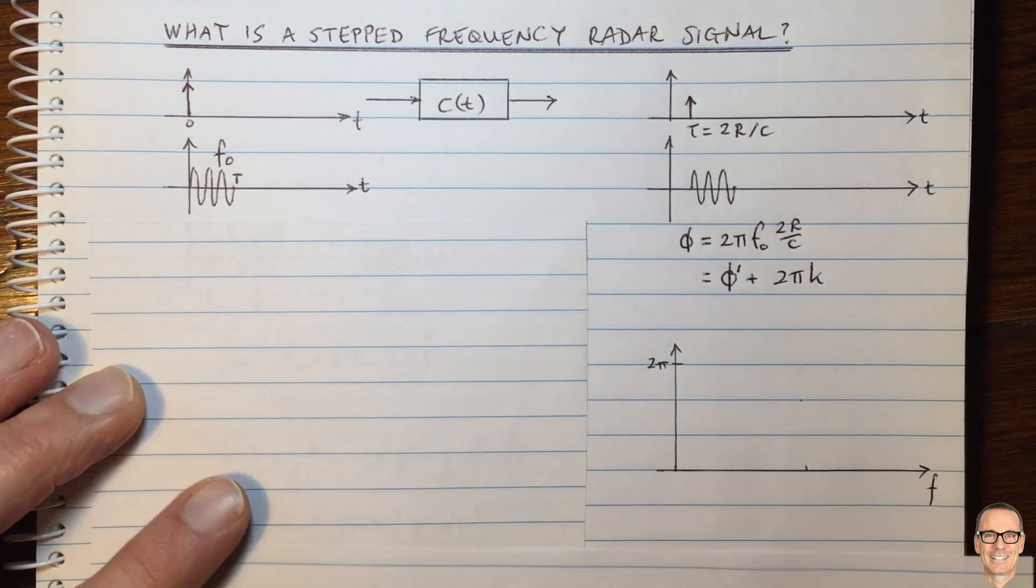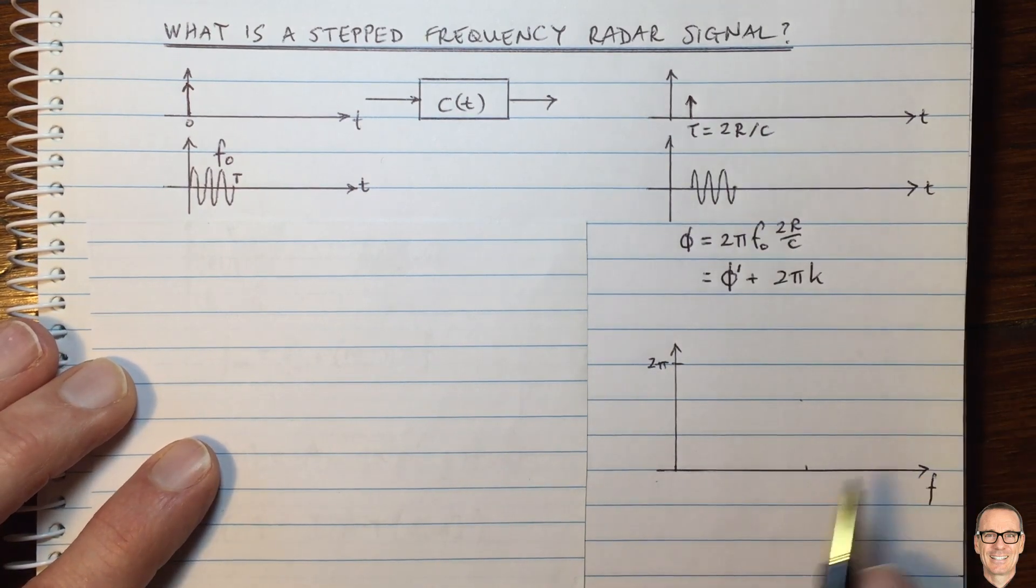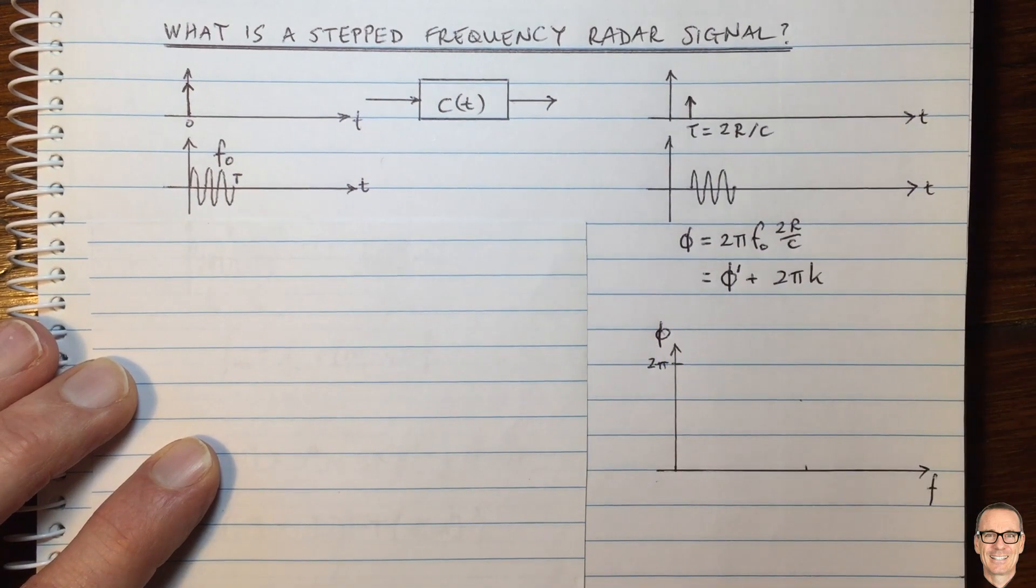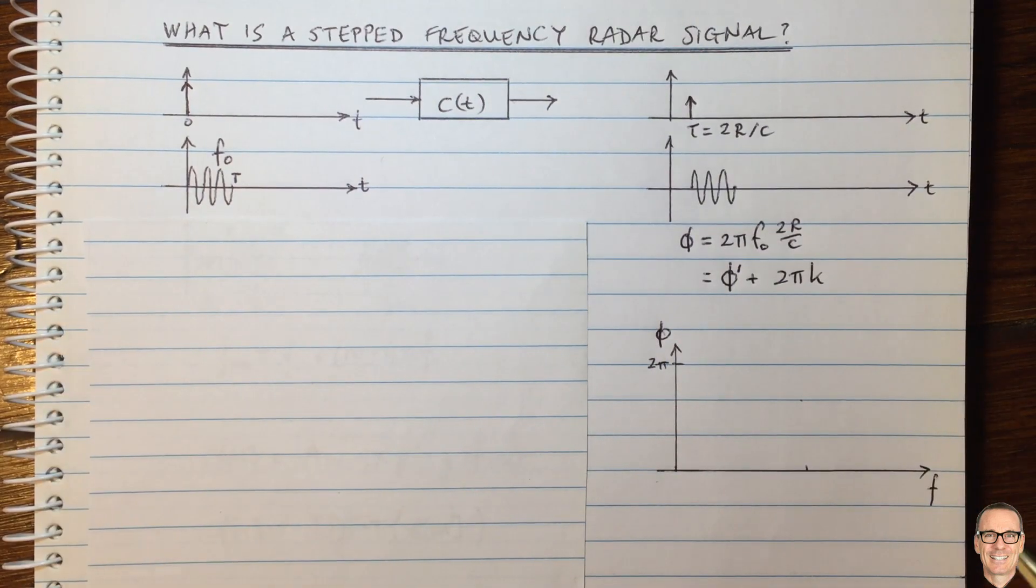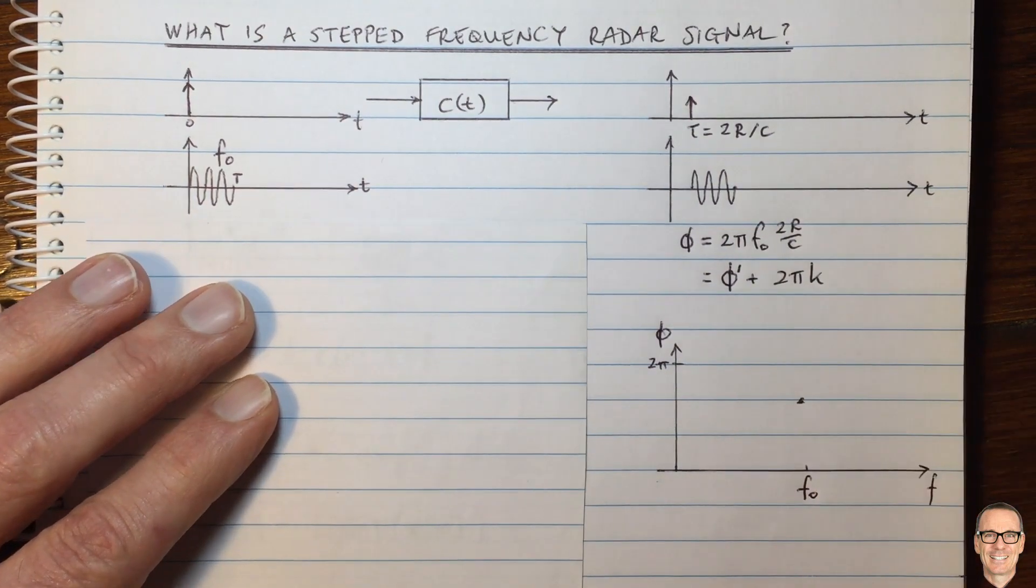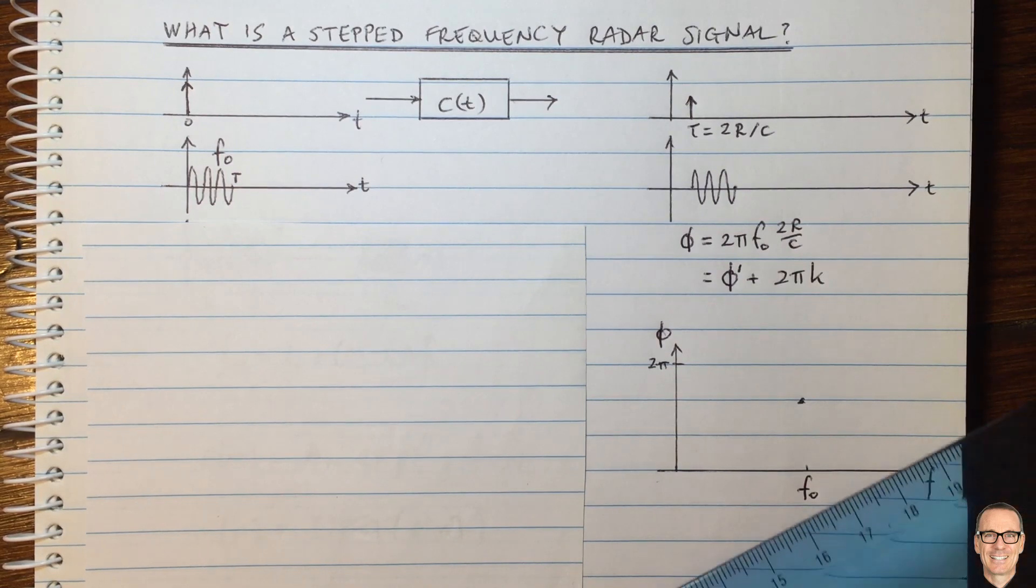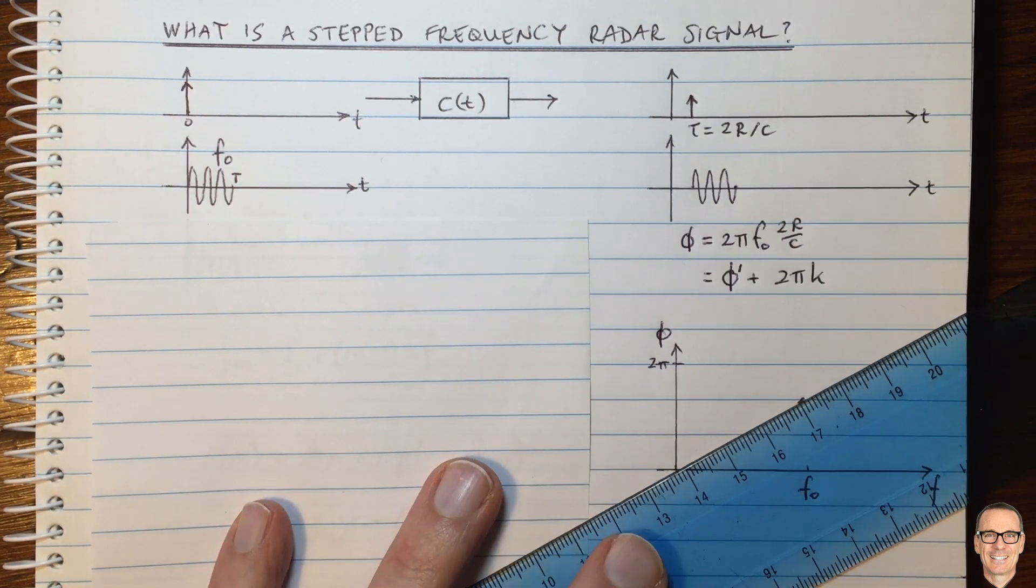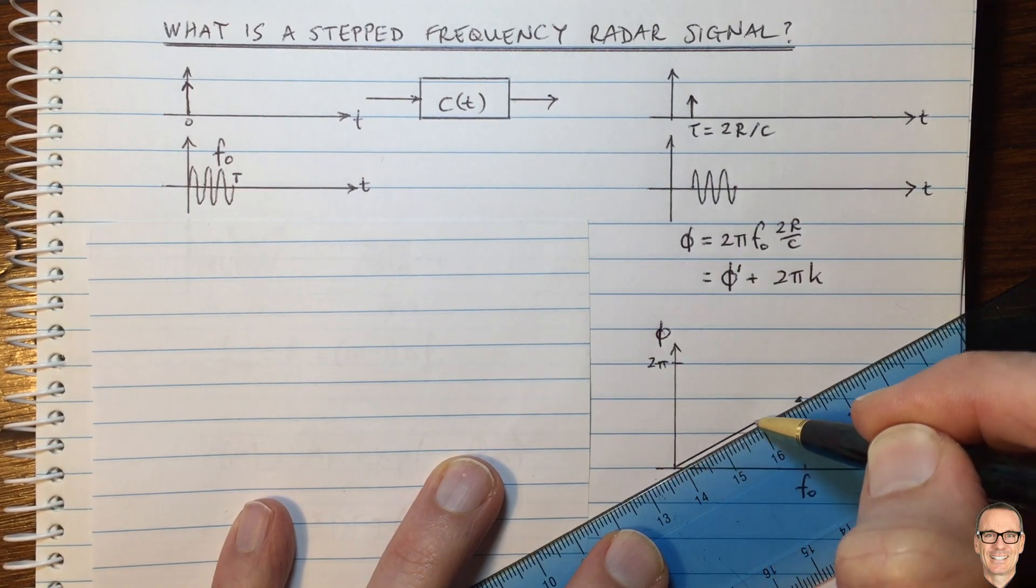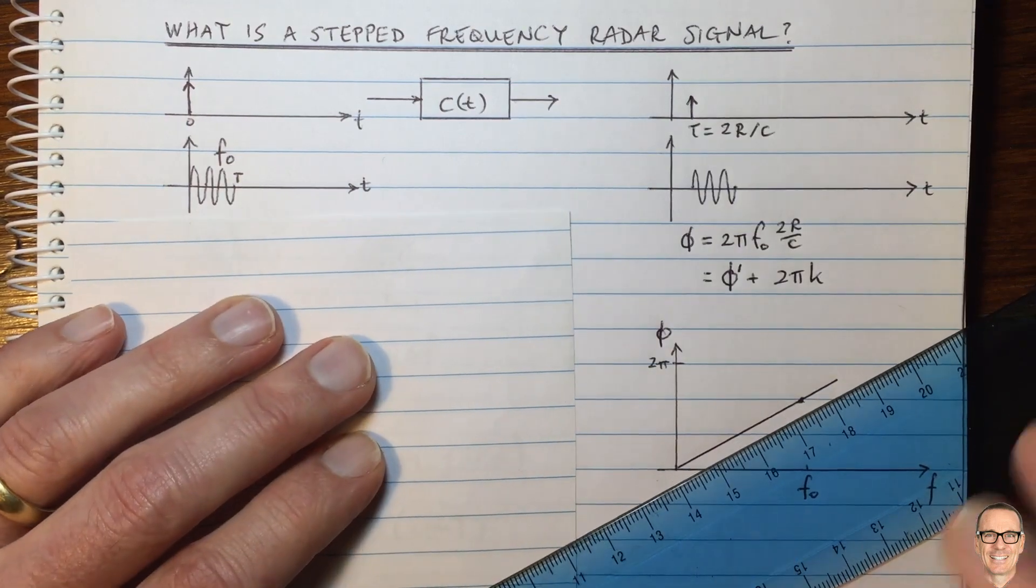We can think about this on a diagram here. If we're plotting the frequency and then the phase on the vertical axis, then we can see if we've measured at our frequency F0, if we've measured the phase to be this value here, we know that a simple delay of a signal gives a linear phase. And if you want to know more about linear phase, there's a video on the channel. Check the description below.